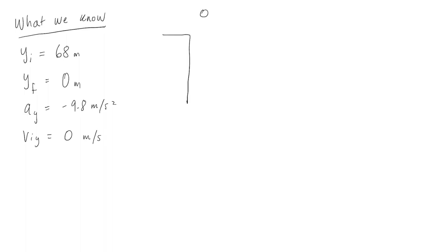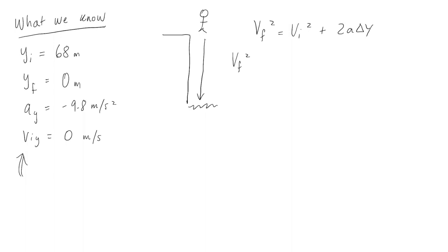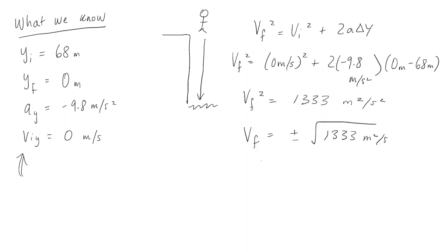We have our person dropping straight down into the water, and these were the variables we were given. Based on what we were given, we should use the kinematic equation vf² = vi² + 2a·Δy. We can plug in our values and solve for vf. What we find is that the final velocity when the person hits the water is equal to about negative 36.5 meters per second — negative because the velocity vector is pointing down.